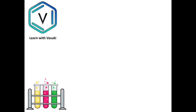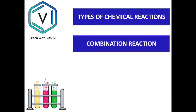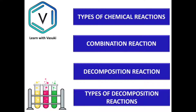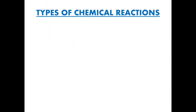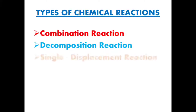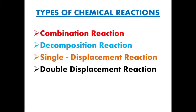In this video I will be teaching you types of chemical reactions: combination reaction, decomposition reaction, and types of decomposition reactions. Chemical reactions are classified into different types: combination reaction, decomposition reaction, single displacement reaction, double displacement reaction. In today's video I am going to explain briefly about combination reaction and decomposition reaction.